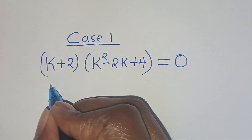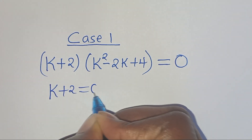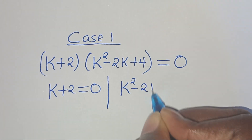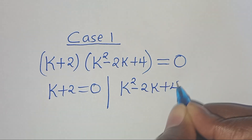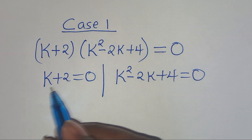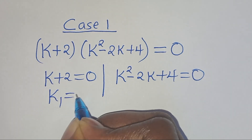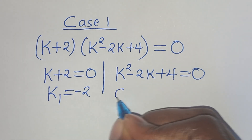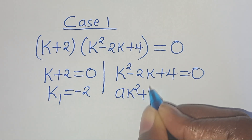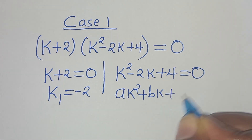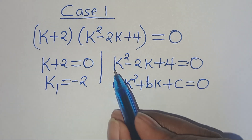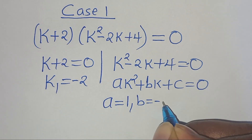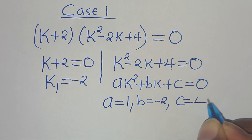We have two parts here. The first part is k plus 2 equals 0, and the second part is k squared minus 2k plus 4 equals 0. From the first part, k1 is equal to minus 2. The second part is a quadratic equation of the form ak squared plus bk plus c equals 0. From this quadratic equation, a equals 1, b equals minus 2, and c equals 4.